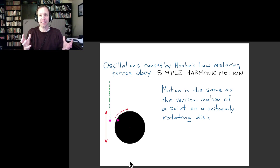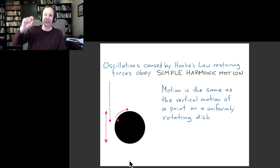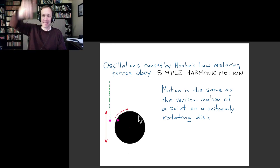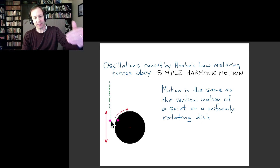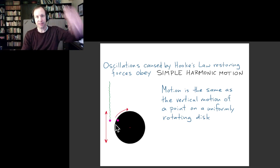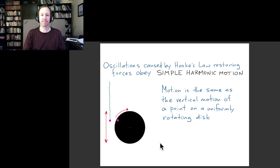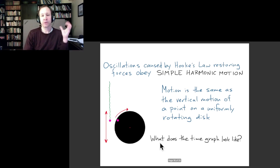That rotation continues with a fixed period forever because of angular momentum conservation. If you just watch a point on a rotating object and track its motion in one direction — the vertical direction in this case — it goes up and down in exactly the same way as the object on the spring, or in general, the object subject to Hooke's law restoring forces. We have a name for that very special kind of motion: simple harmonic motion.